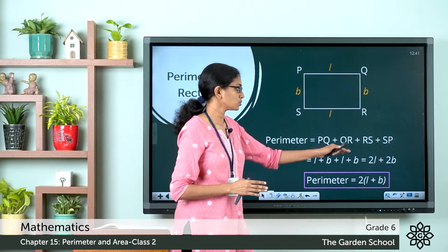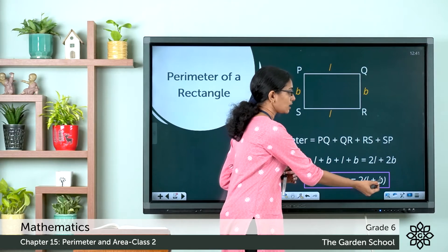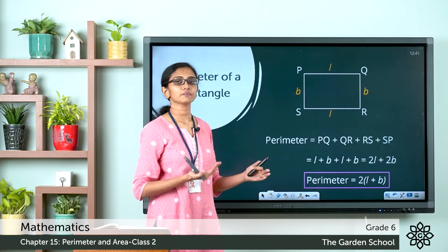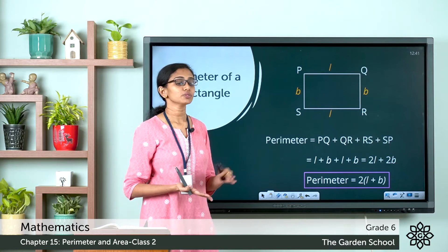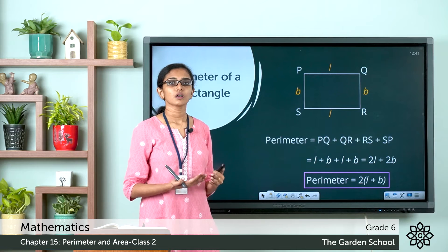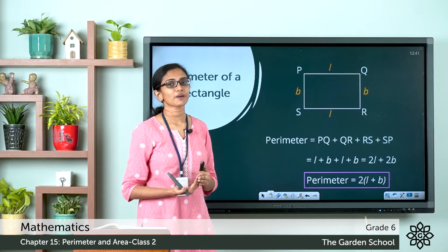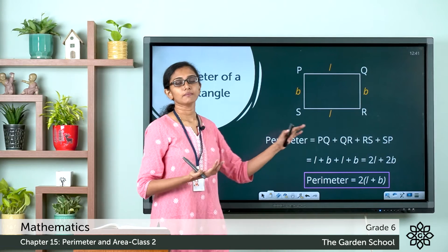So there is a common factor 2 there. We can rewrite this as 2 into L plus B, the length plus breadth. So the perimeter of a rectangle will be equal to 2 times the sum of its length and breadth. The formula for finding out the perimeter of a rectangle is equal to 2 times L plus B.